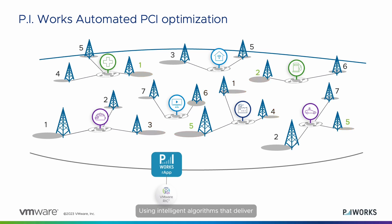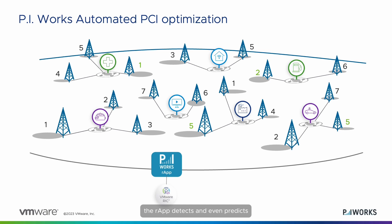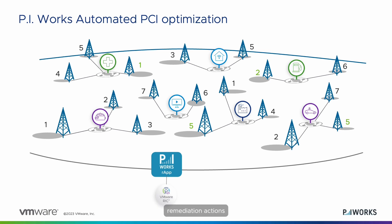Using intelligent algorithms that deliver cognitive site profiling, user activity awareness, and neighbor relation considerations, the R-App detects and even predicts future PCI conflicts, while automatically conducting remediation actions.